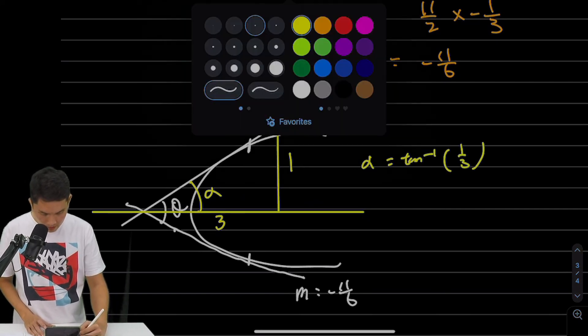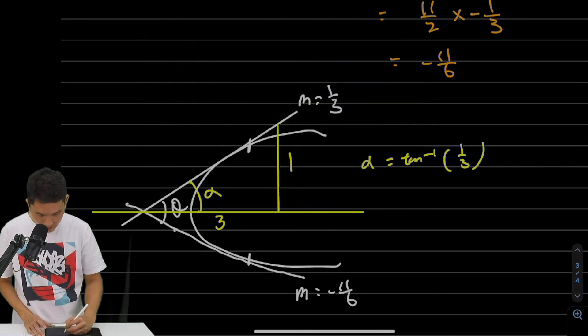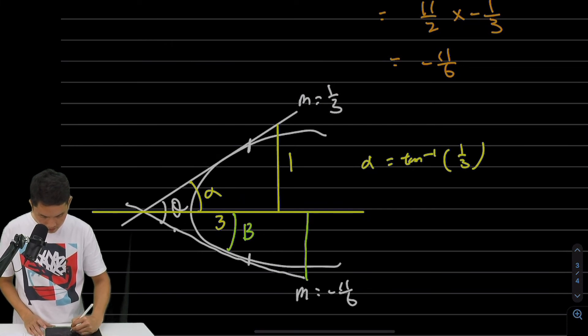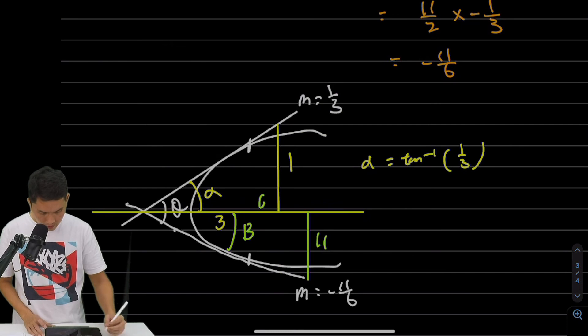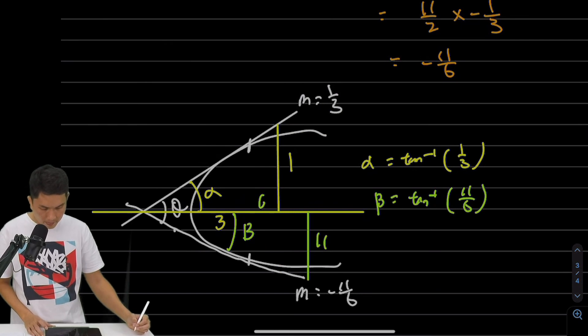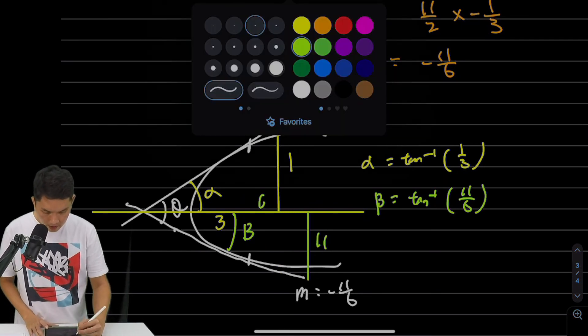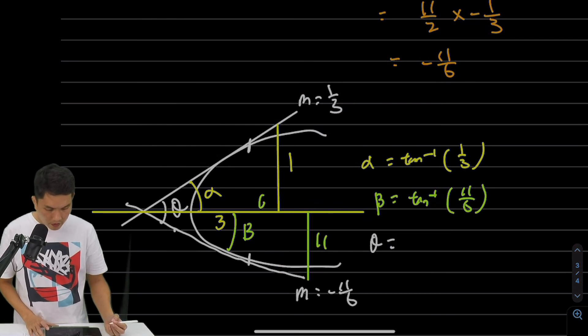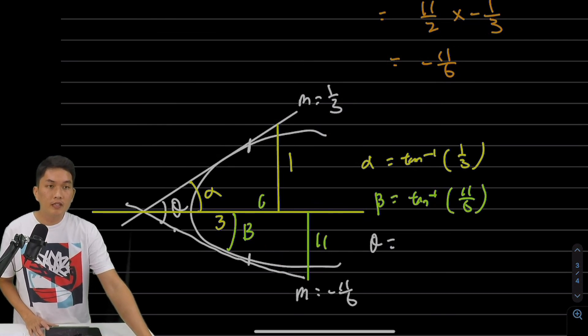Alpha = tan⁻¹(1/3). For the other side, we'll call this angle beta. This has ratio 11/6, so beta = tan⁻¹(11/6). To find our answer theta, we have θ = tan⁻¹(1/3) + tan⁻¹(11/6).